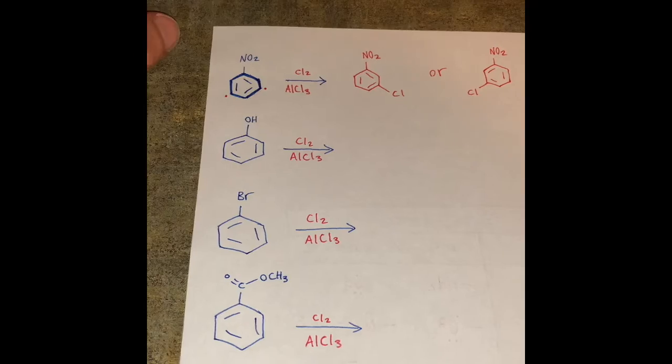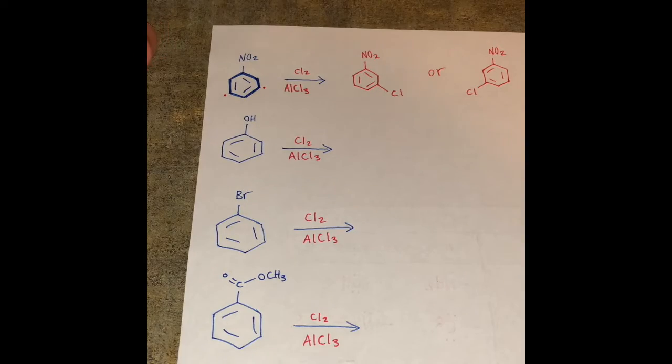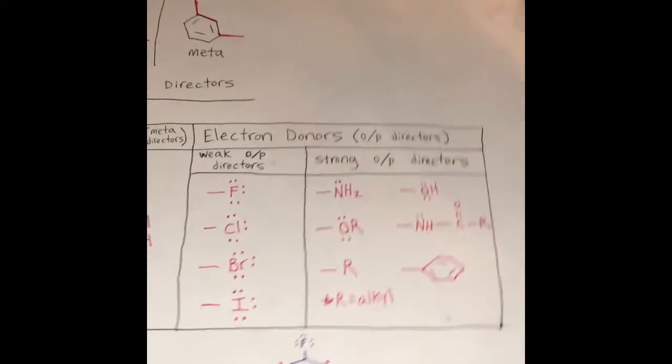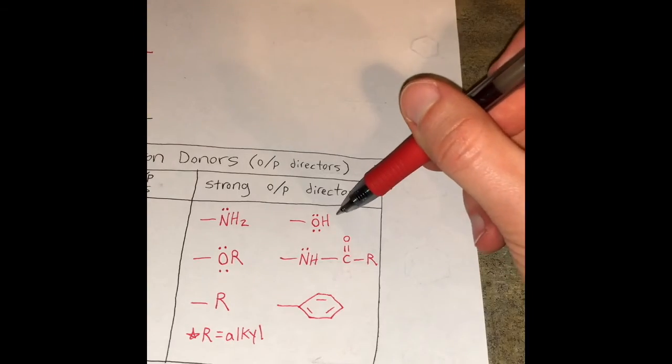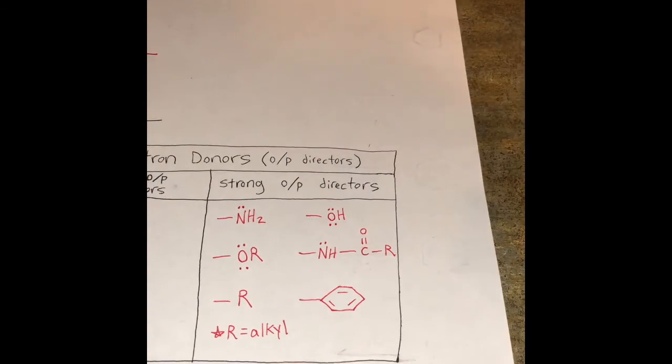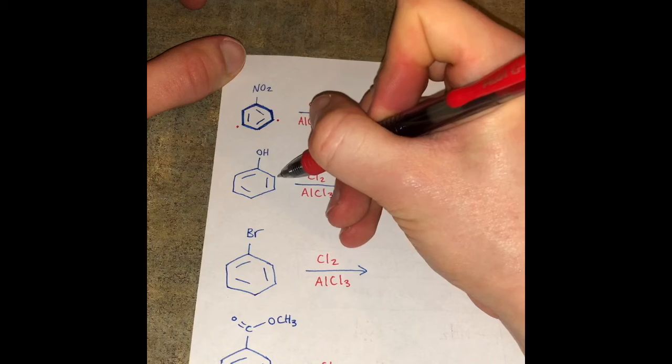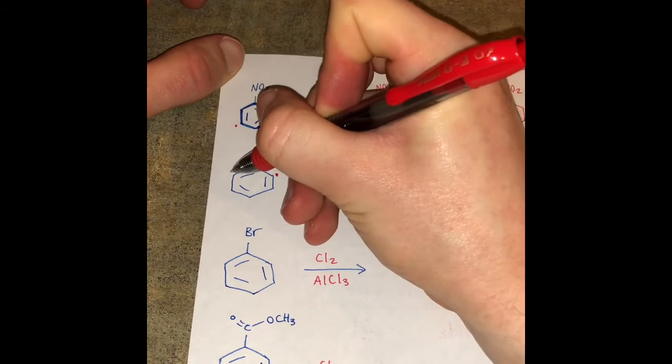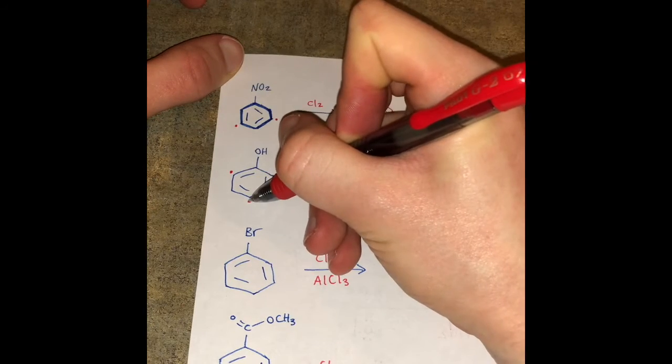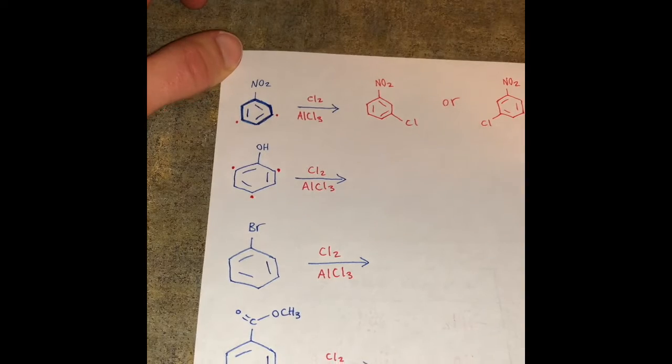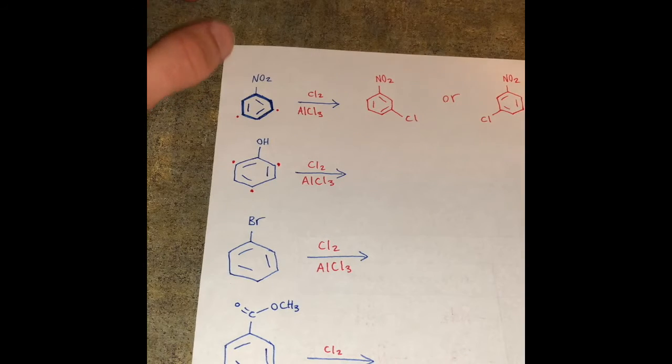Next we have an OH group. So if we remember from our chart OH is an electron donor. So we see it's a strong ortho para director. So again I'm going to make dots where ortho and para are. So we can add the Cl at any of those three positions.